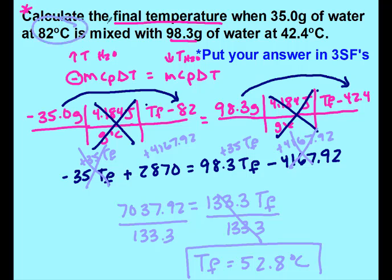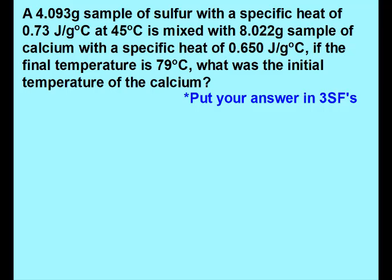Notice that final temperature is between the two initial temperatures. Depending on your masses of both is where it falls — it's not exactly in the middle because I didn't have equal amounts of water. But it has to be between those two. If I got an answer of 35 or greater than 82, that would be impossible. Always make sure your answer makes sense, which in this case it does. Go ahead and try setting up the next one.